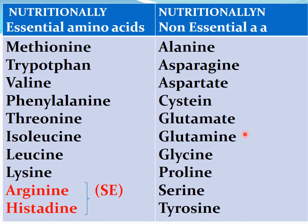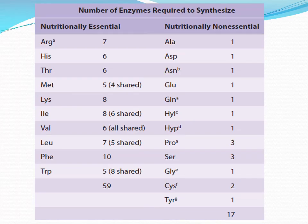Nutritionally non-essential amino acids are alanine, asparagine, aspartate, cysteine, glutamate, glutamine, glycine, proline, and serine.